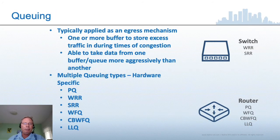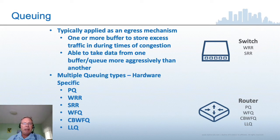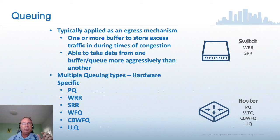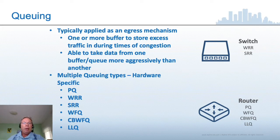What we'll focus on now is queuing — probably one of the most important things people implement in the entire QoS realm. Queuing is typically applied as an egress mechanism. Most Cisco machines can do egress queuing, but fewer can do ingress queuing. If I'm trying to send information out of an interface but its small hardware buffer is full, I would store that packet in a queue. Queuing is typically one or more buffers to store excess traffic in times of congestion.